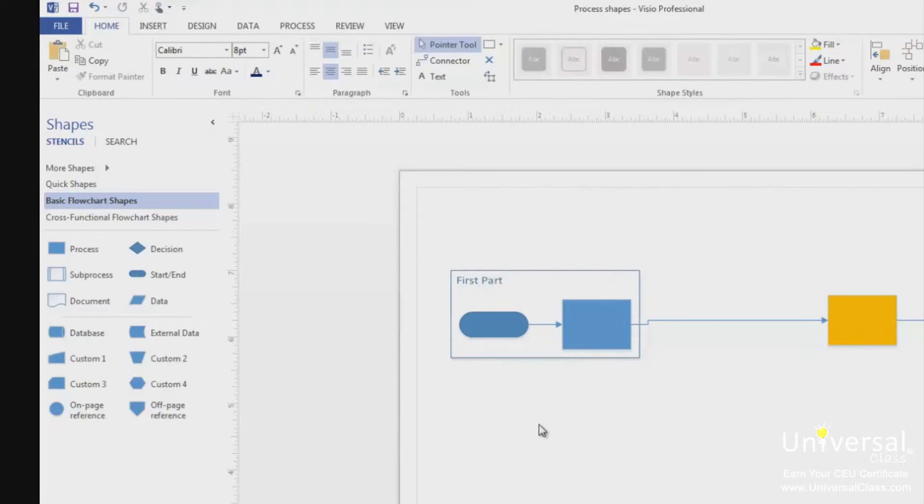If you don't have any shapes selected when you add the container, the container is placed in the middle of the view. It will not contain any shapes.